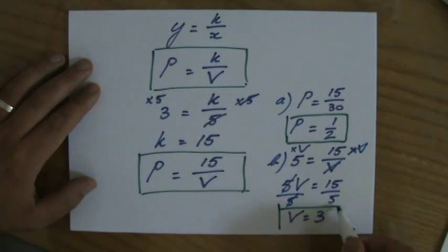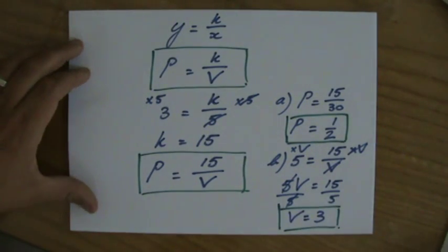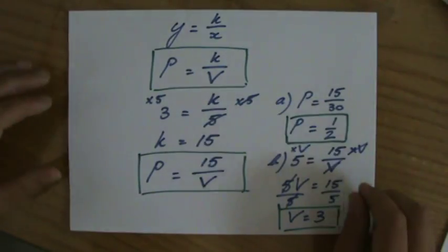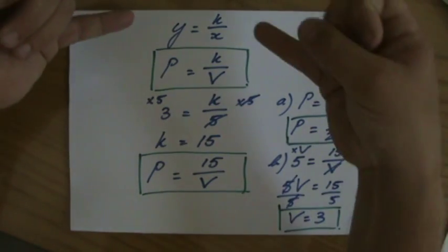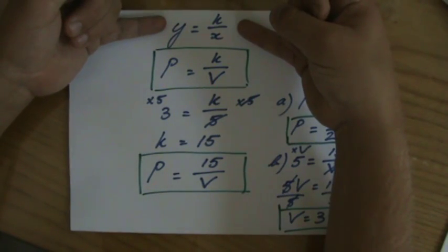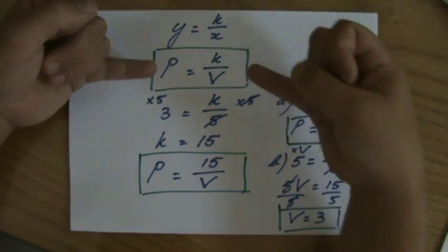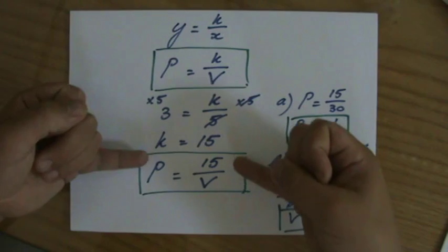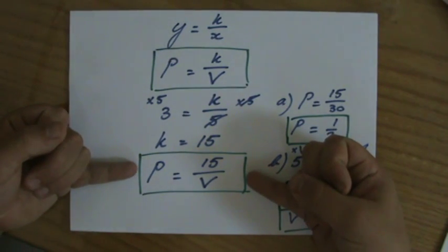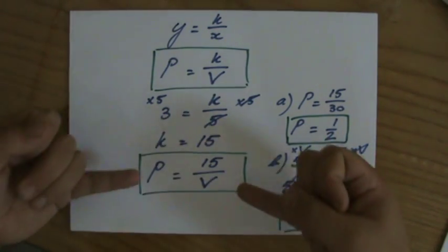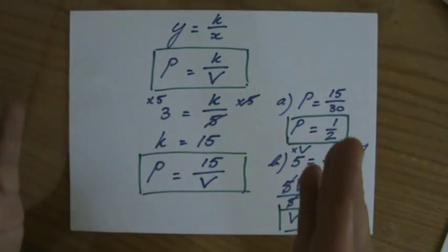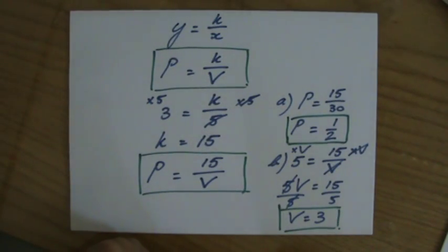Okay, so inverse proportion. They give this big question, it looks very complicated, but you know the general equation, swap it for your letters and you've got to find that constant, and that is not necessarily difficult. So P equals 15 over V is the equation for your question, and once you have constructed that equation you can answer the actual questions they're asking you to answer.